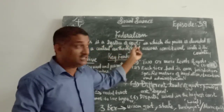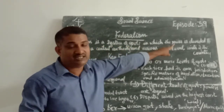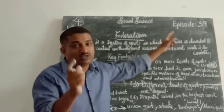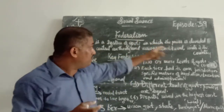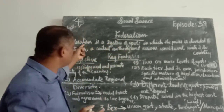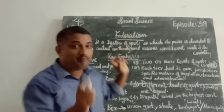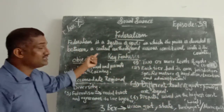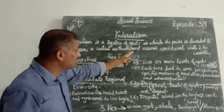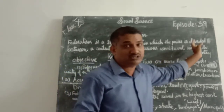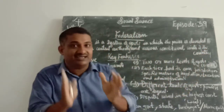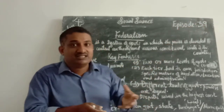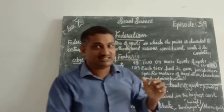Federalism is a system of government in which the power is divided. Power is not concentrated by a person. But if the power is divided, federalism means power is shared — divided between the central authority and various constituent units of the country. In India there is a central government, state government, and local government.